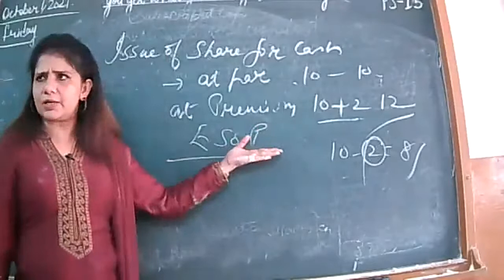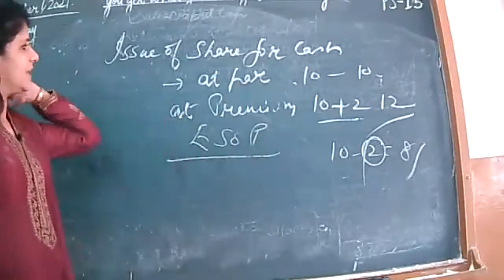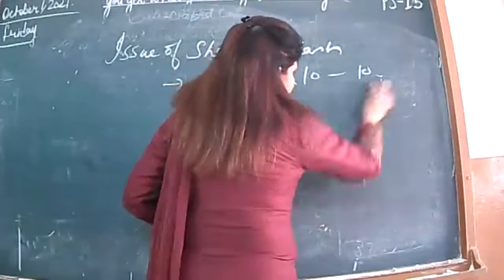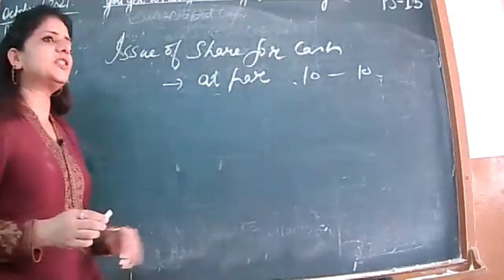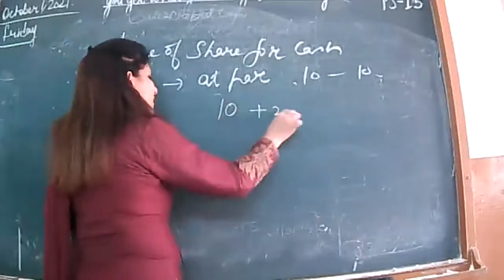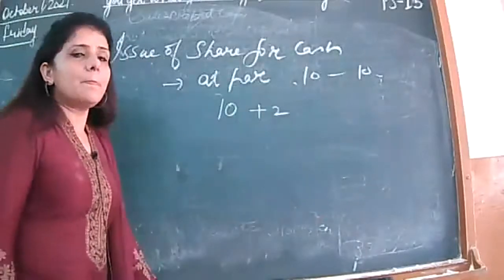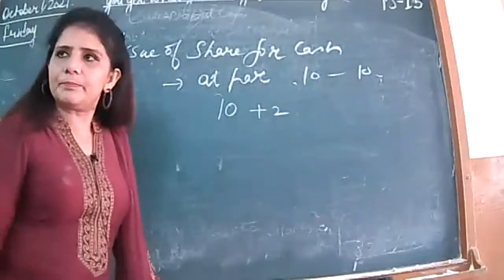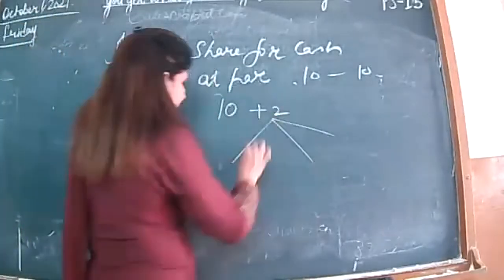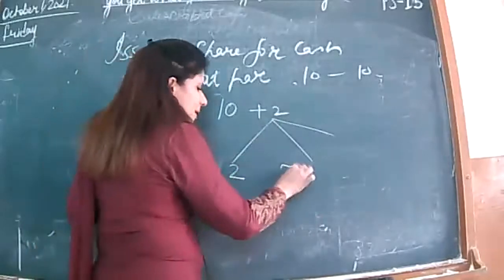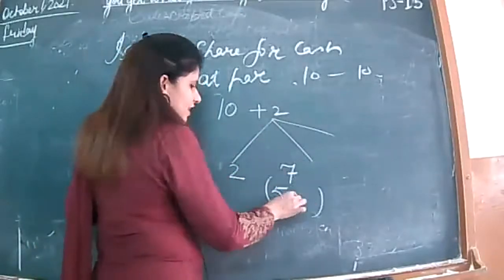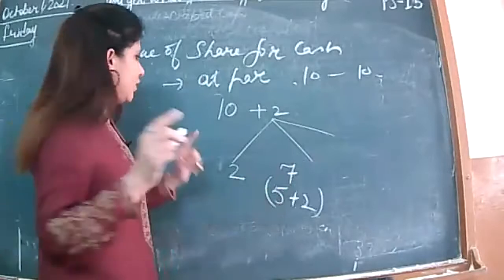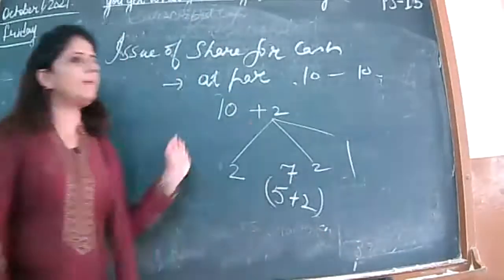Now the question is: this premium — how do we do it in journal entries? It is a 10-rupee share with 2 rupees extra — that means premium. So the issue price is 12 rupees. If the question says premium is always to be received at the time of allotment, the question will tell you: 2 rupees on application, 7 rupees on allotment — of which 5 is face value and 2 is premium. Or it may divide: 2 rupees on first call, 1 rupee on second call. He can give you the demarcation in any way.